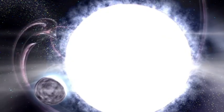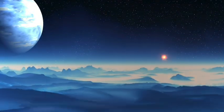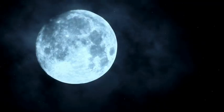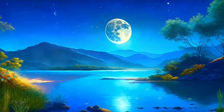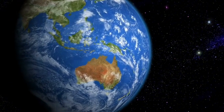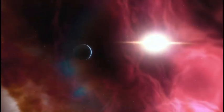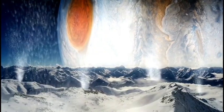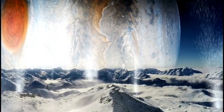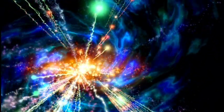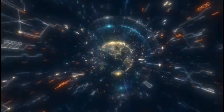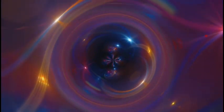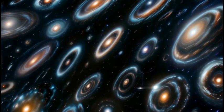Proxima Centauri is part of the Alpha Centauri triple star system, which includes Alpha Centauri A and B. Proxima Centauri, also known as Alpha Centauri C, is a red dwarf star located 4.24 light years away, making it the closest star to our solar system. Despite this proximity, Proxima Centauri is invisible to the naked eye due to its apparent magnitude of 11.13.